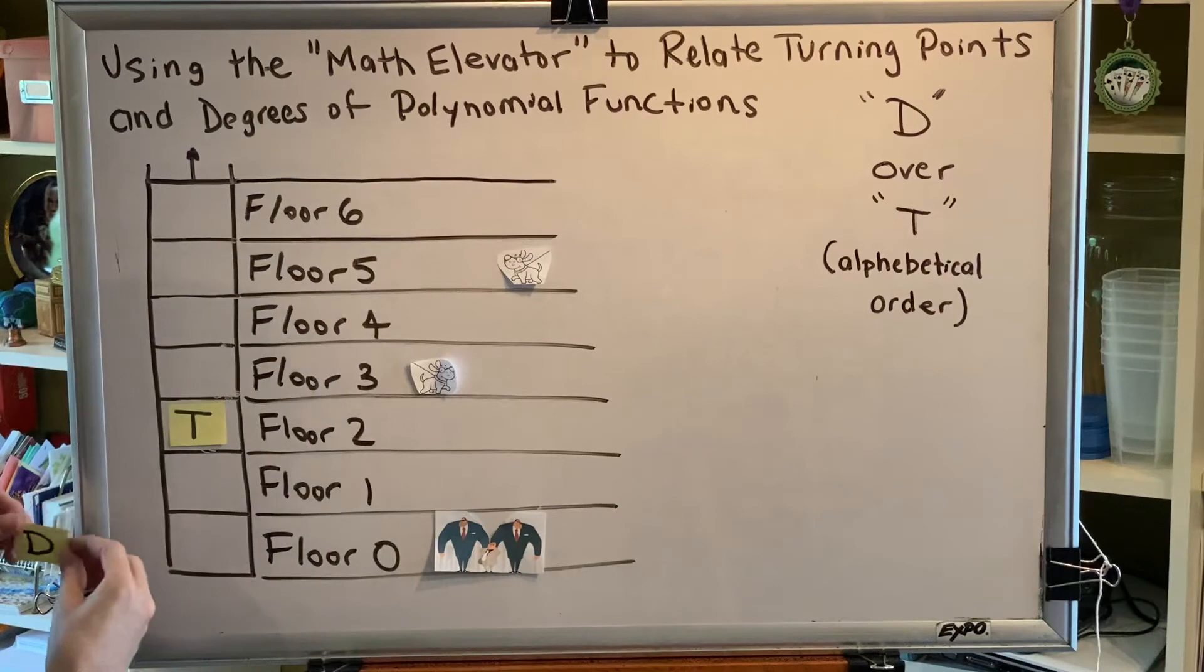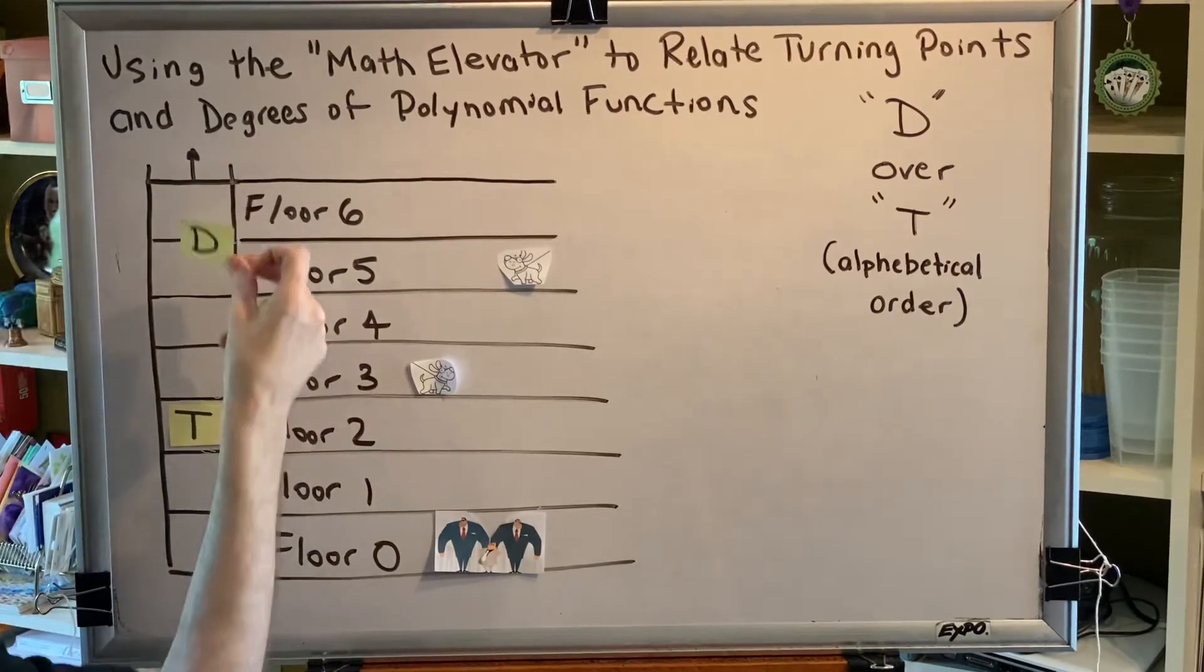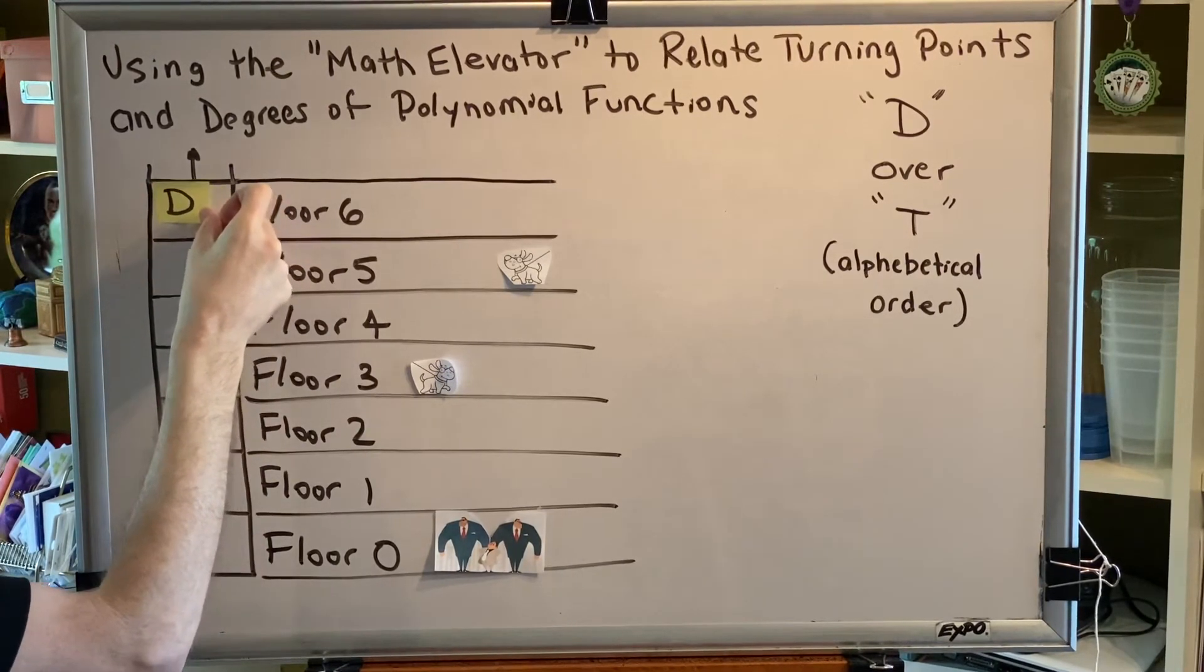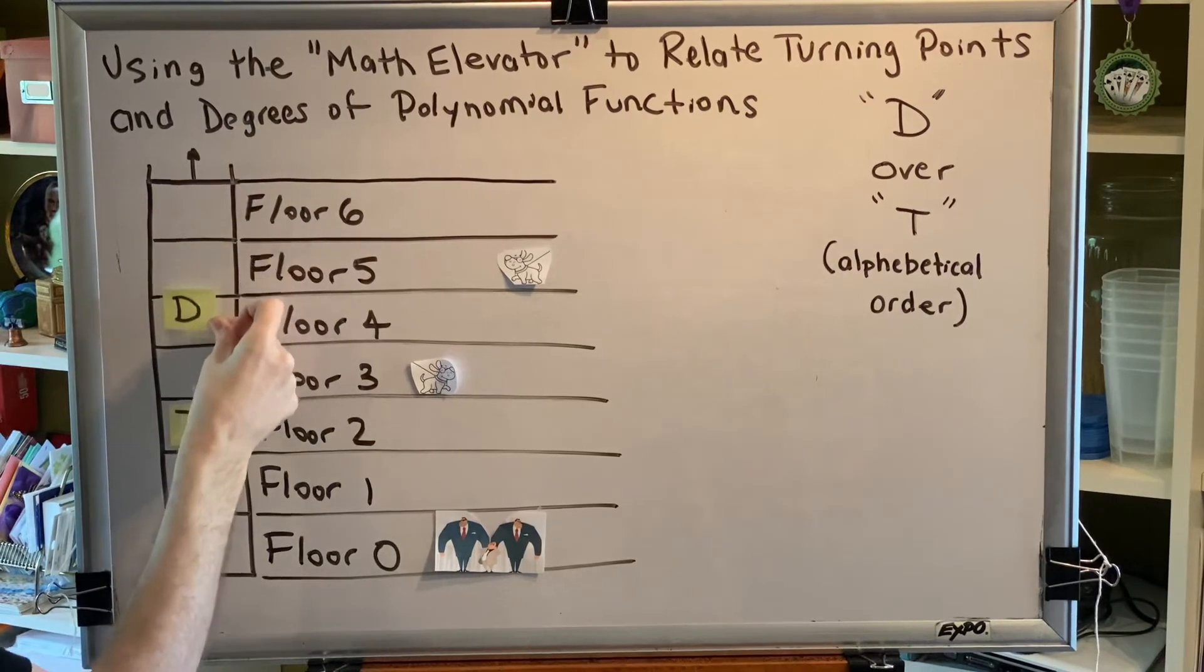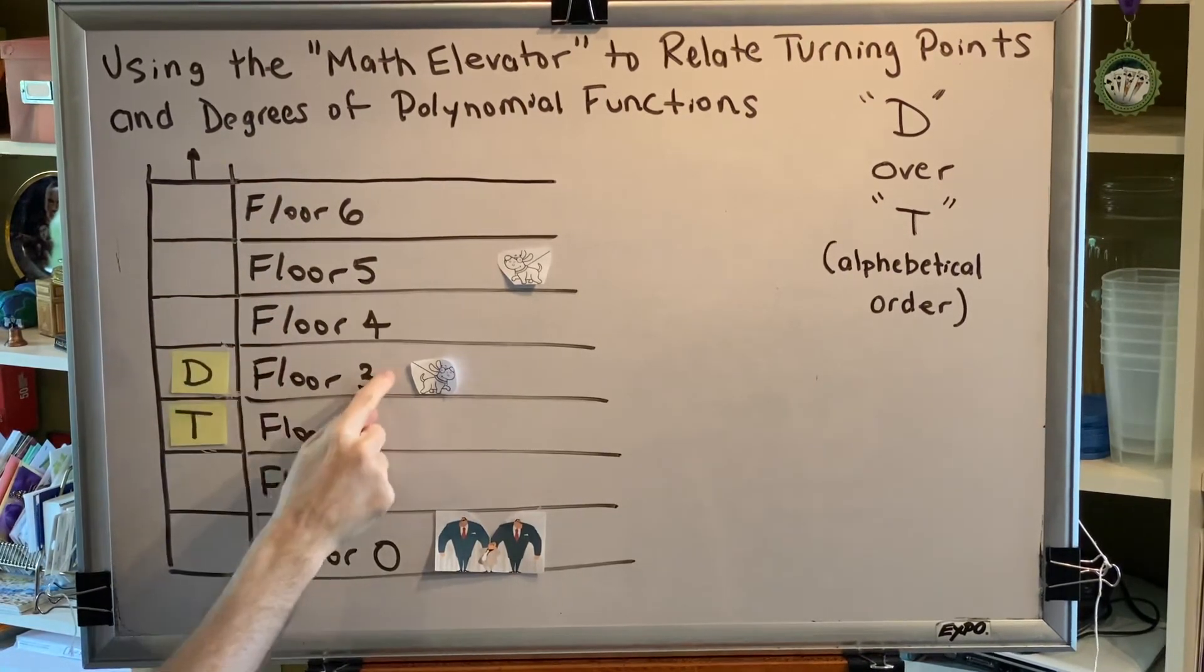Well, D over T. So the degree could be here or here or here or here and right on up towards infinity. If the question said, what is the least degree? What is the smallest degree that you could have? Then the answer to that question would be three.